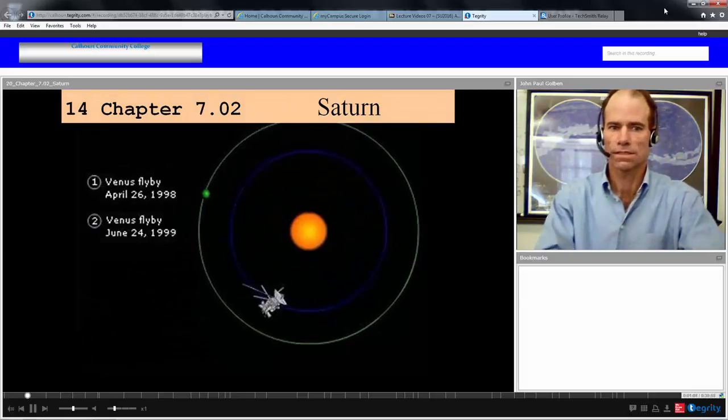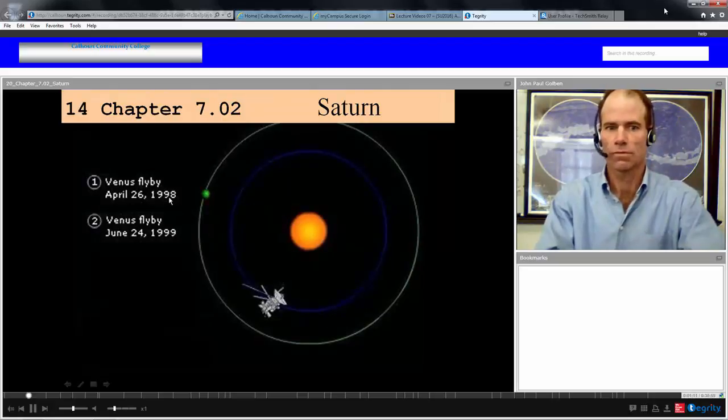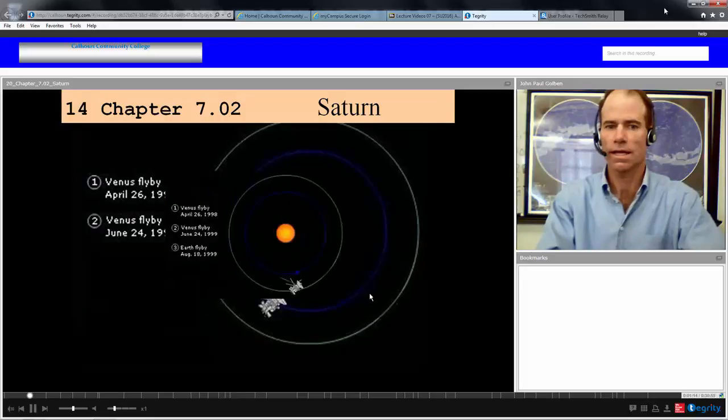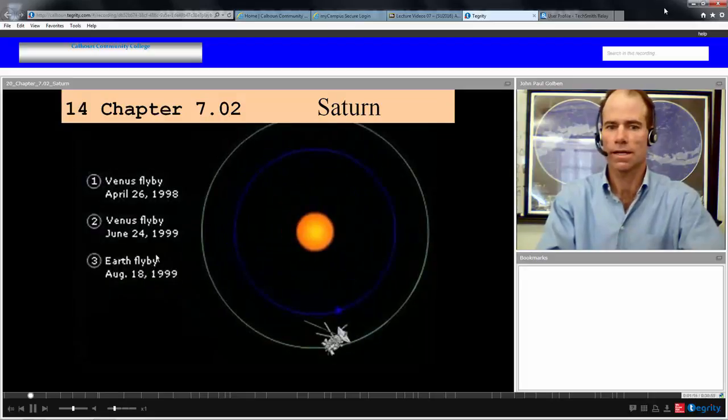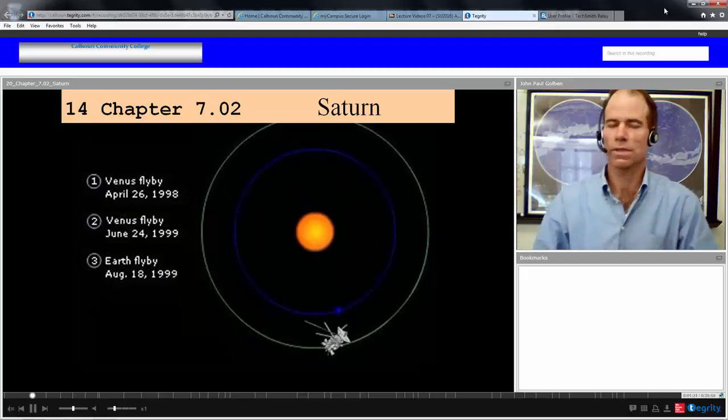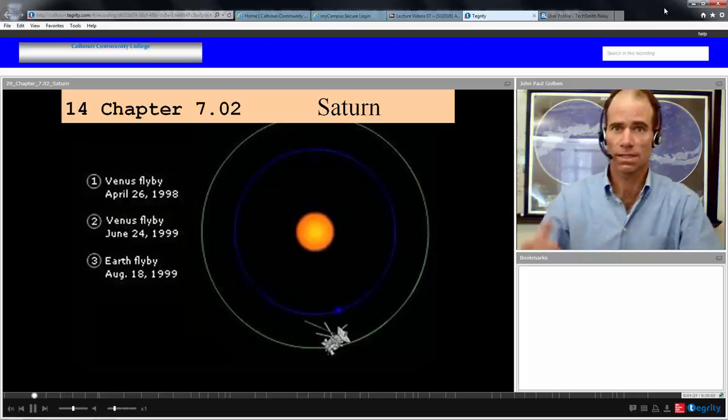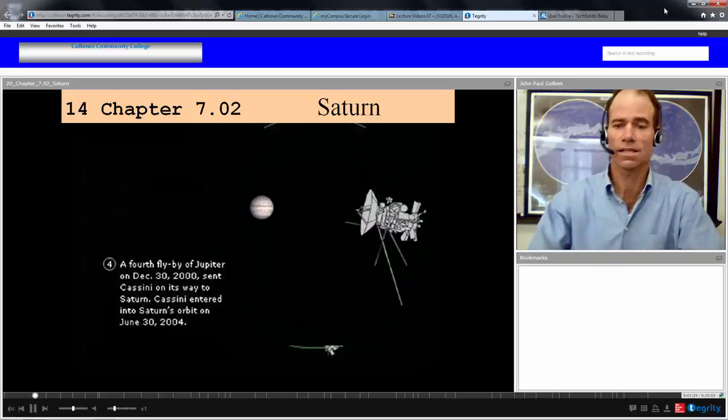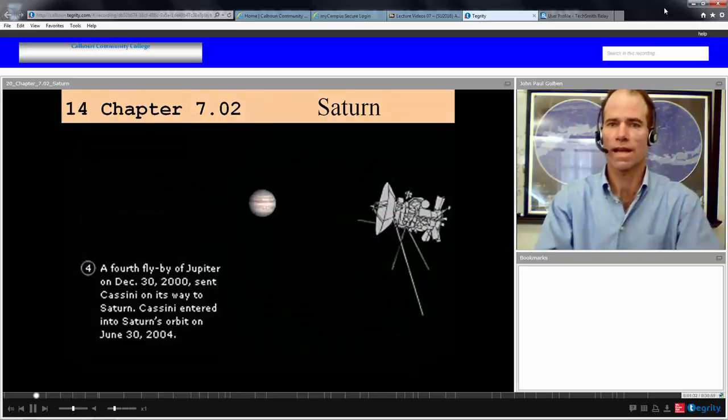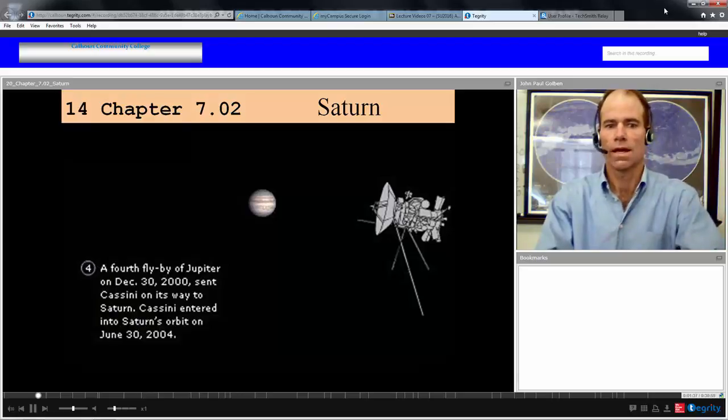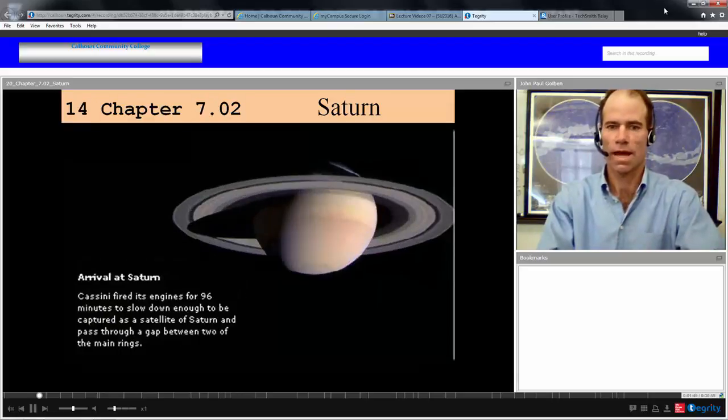That's exactly what Cassini did. It did a flyby of Venus in 1998, another in 1999, went by Earth in 1999, each time picking up more speed—free energy. Hence it can go to the outer solar system much faster, get there in a few years rather than many years. It went by Jupiter, picked up the last bit of gravitational slingshotting, and finally arrived at Saturn.